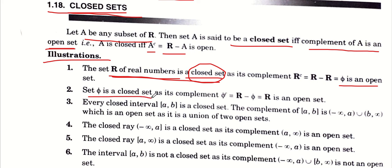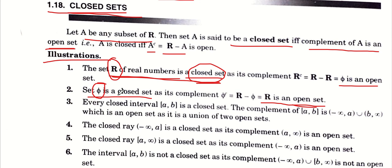∅ को अब हम proof करेंगे कि closed set है। क्योंकि ∅ का complement R minus ∅, यानि कि R जो की open set है, इसलिए ∅ closed। तो अगर आपको ऐसा example देना हो किसी set का जो closed भी हैं और open भी हैं, तो simple examples हैं आपके पास R और ∅।